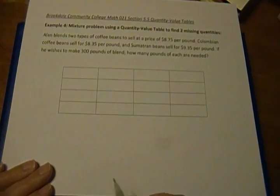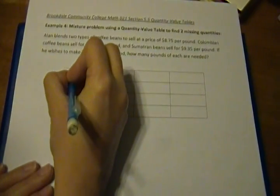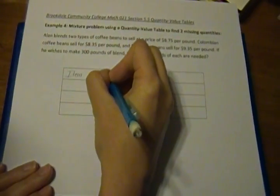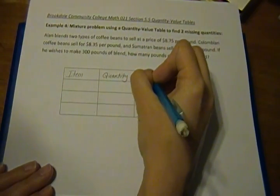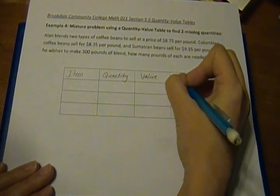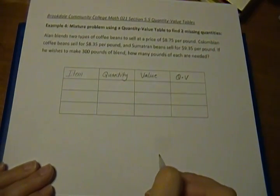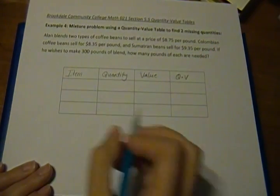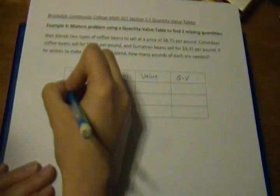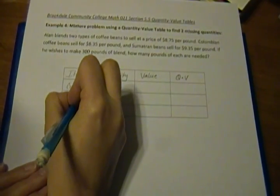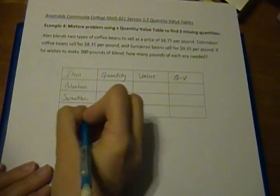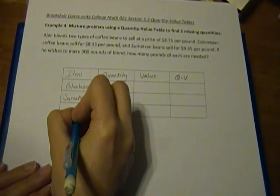So just like all the other quantity-value tables we've done, we start off by filling in our headers. The first column is our items, the second will be our quantities, the third our value, and the last will be the Q times the V. So here we have two types of coffee beans: Colombian and Sumatran. And then this last box here is our total.